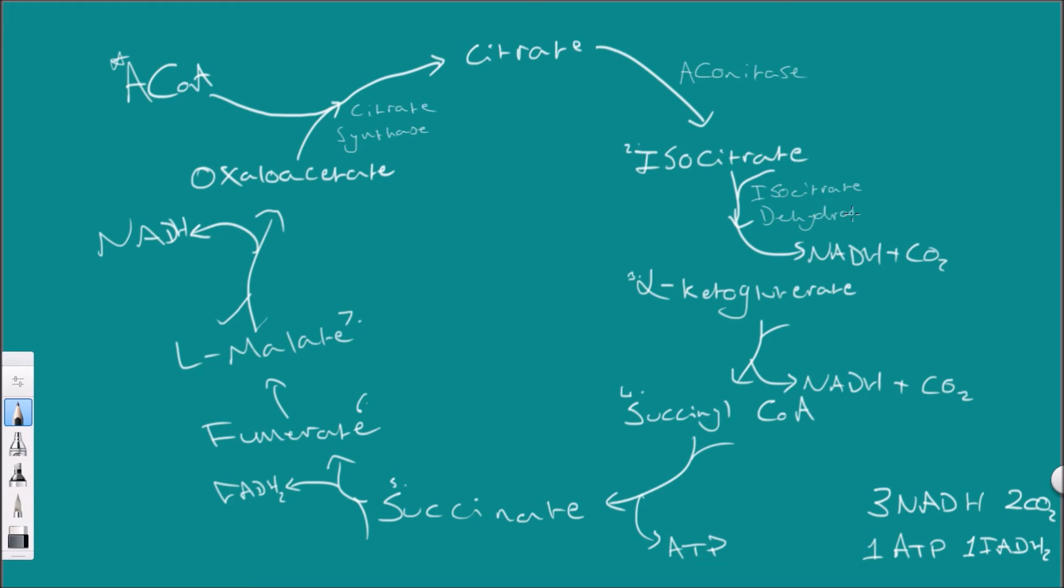When this isocitrate converts to alpha-ketoglutarate, step two to three, we use an enzyme called isocitrate dehydrogenase. A nice little tip is that out of eight of these steps, four of the enzymes are dehydrogenases. The first of which being this isocitrate dehydrogenase.